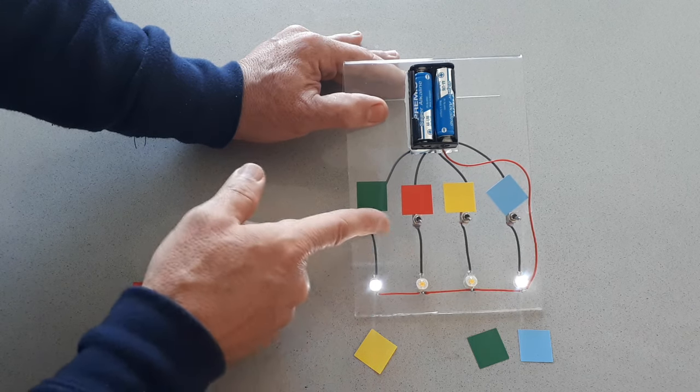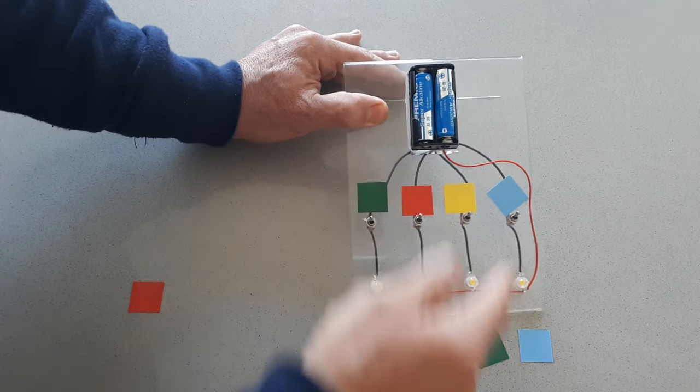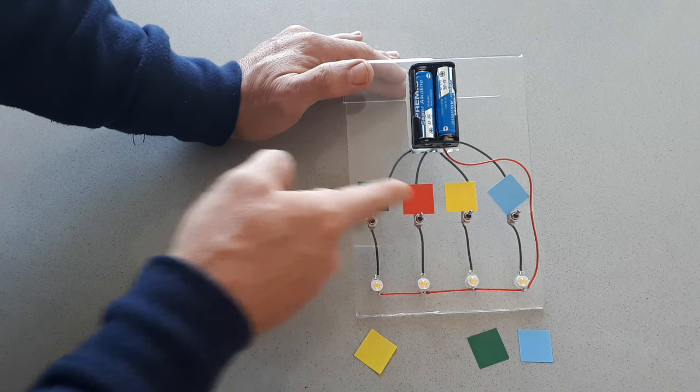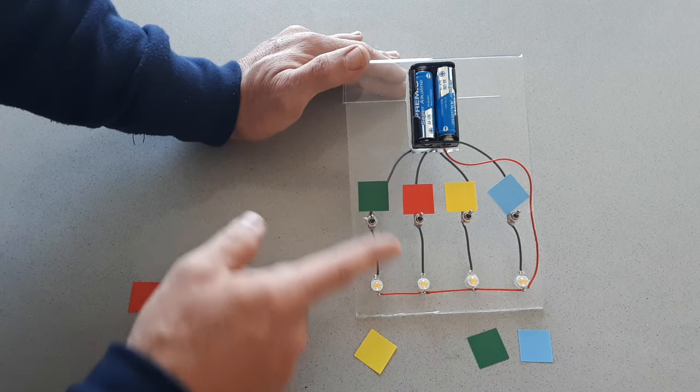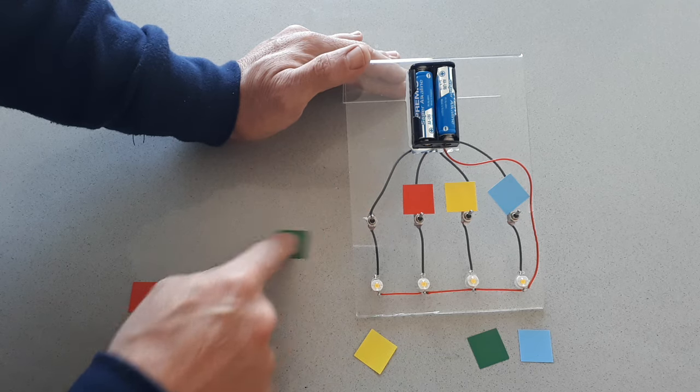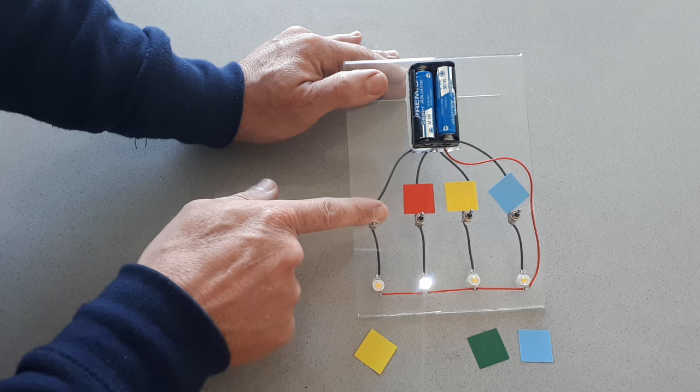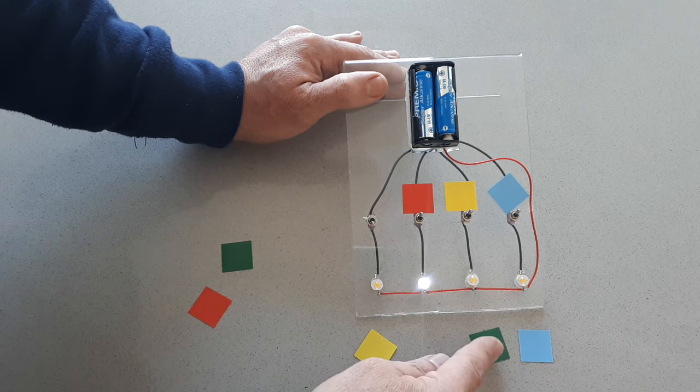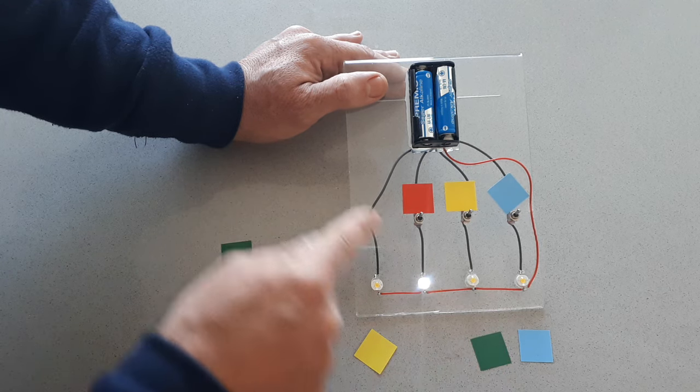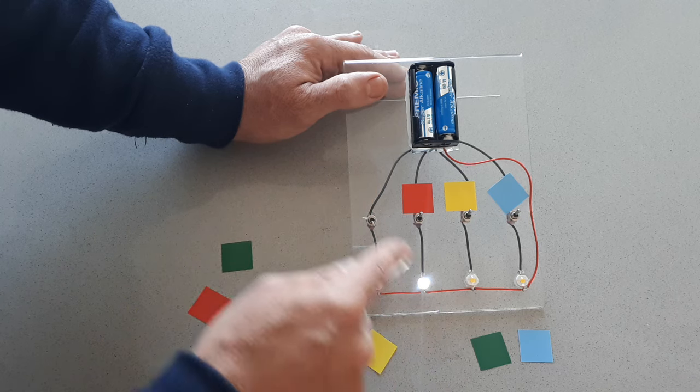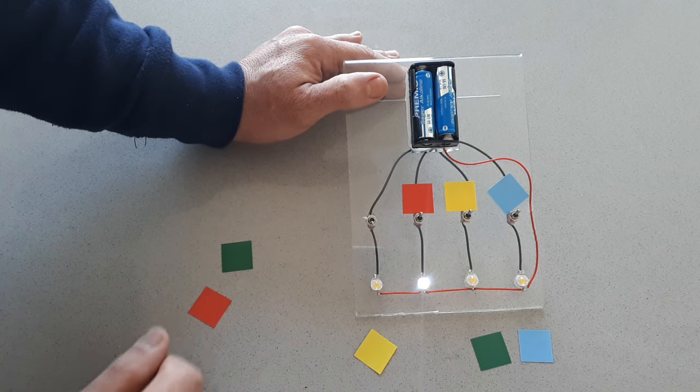What would happen now if instead of removing one of the colors here, I remove one of the colors on this side? For example, if I remove the green one. If I remove the green one, it means that the switch will no longer work with the green one. As this one has no color and this position has no color, then this switch will work, this one.